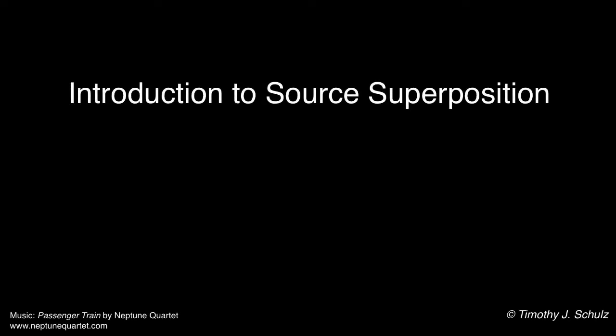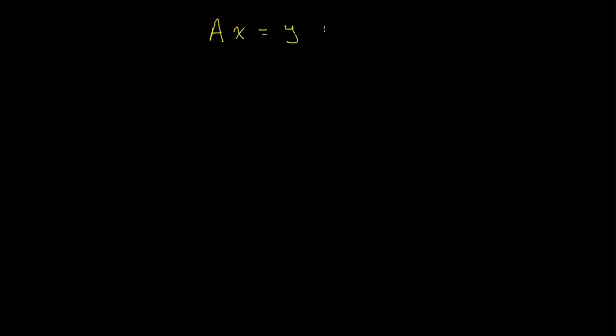In this lecture, we introduce the source superposition method for determining unknown voltages and currents in electric circuits. After studying the node voltage and mesh current methods, we should now be familiar with the idea that the voltages and currents in an electric circuit can be determined as the solution to a system of linear equations.